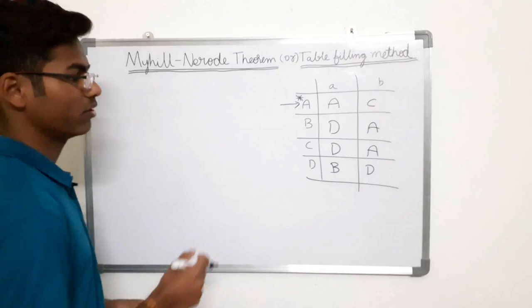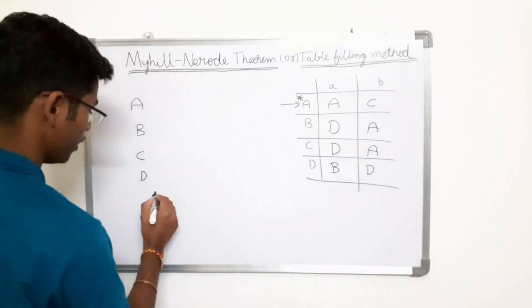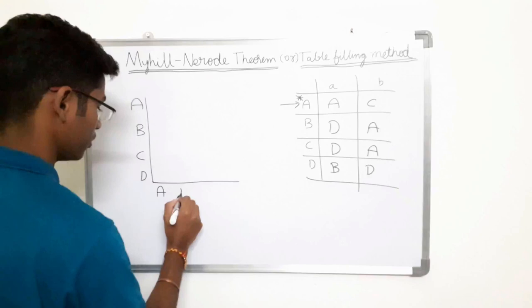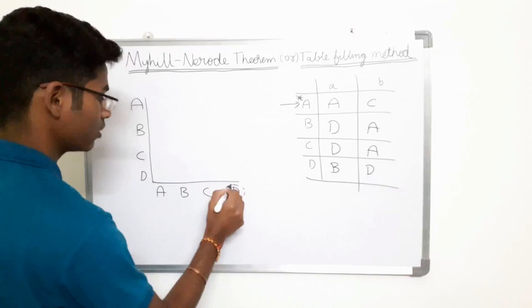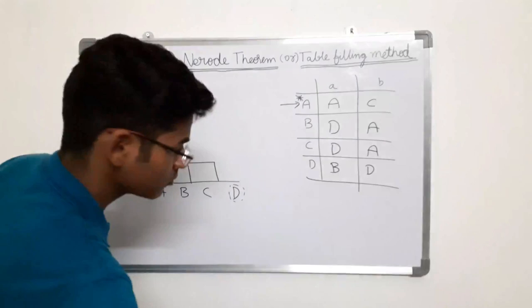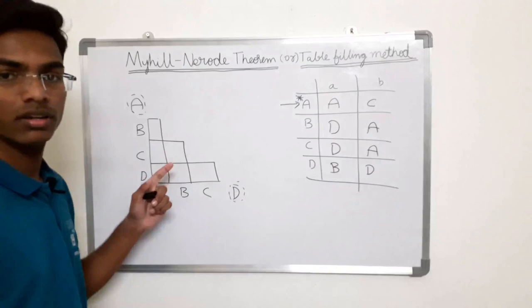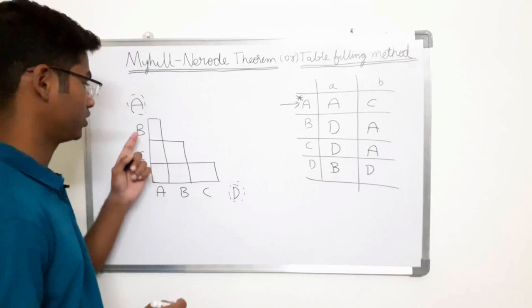Now let us implement step one. Our DFA has four finite states: A, B, C, and D. We construct a table with rows and columns labeled A, B, C, and D. Step one is now completed — we have drawn the table framework and will now implement step two, which involves marking the cells.